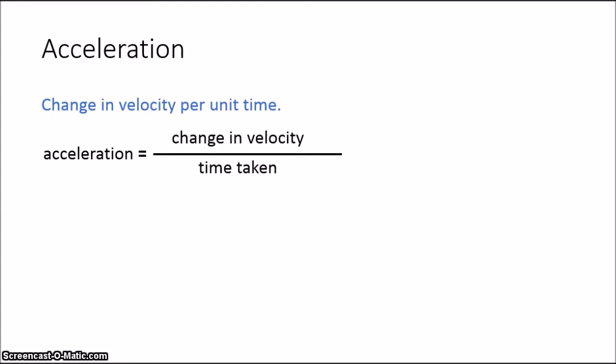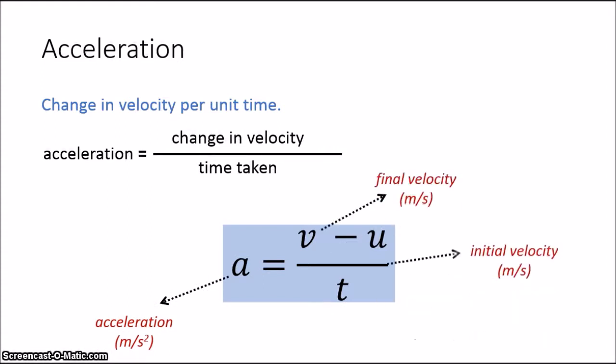So, we can use this formula to calculate acceleration. And if we use the symbols, we can rewrite the formula in this form. Here, A represents the acceleration and its unit is meters per second squared. V and U both represent velocity. V is the final velocity, U is the initial velocity of the object, and T is the time taken.